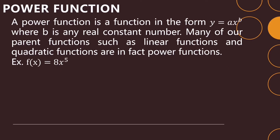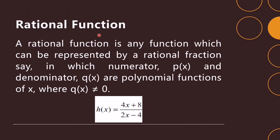A rational function is any function that can be represented as a rational fraction, where the numerator p(x) and denominator q(x) are both polynomial functions of x, and q(x) is not equal to 0. For example, a fraction with numerator 4x plus 8 and denominator q(x) is a rational function.